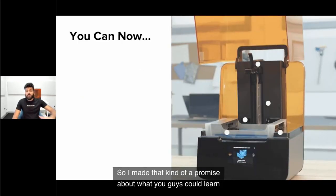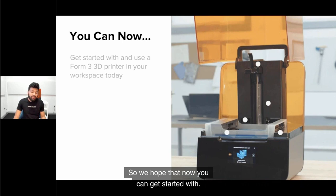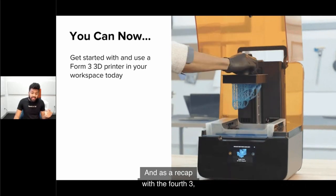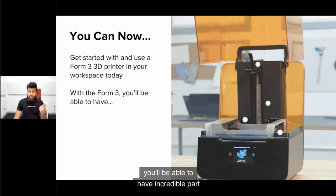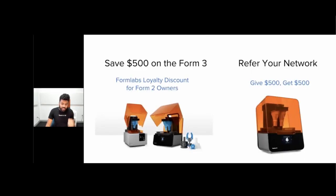I made a promise about what you guys could learn earlier. I hope we've delivered on that. We hope that now you can get started with and use a Form 3 3D printer in your workspace today. We hope that workflow is much more clear to you now. As a recap, with the Form 3, you'll have incredible part quality, easy support removal, and non-stop printing. Quick notice for people who have the Form 2 already: you can save $500 on the purchase of the Form 3. We have a loyalty discount. And we have a referral program. If one of your referrals purchases a Form 3, they get $500 off their order, and you get $500 to use on materials or accessories.